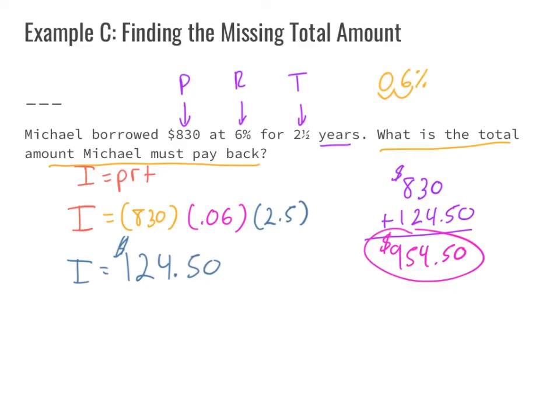Don't forget to add the dollar sign because this is a word problem and we need a word answer. The total amount of money Michael needs to pay back is $954.50. That brings us to the end of this set of notes. If you like this video, throw us a thumbs up; if you love it, go ahead and subscribe, and we'll catch you in the next one.